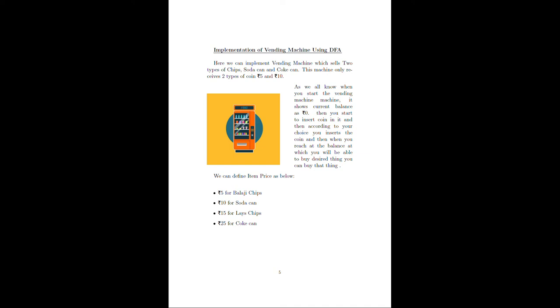Now we can define item prices as below. Simply, the item prices are the states. Q means rupees 5 for Balaji chips, rupees 10 for soda can, and rupees 15 for Coke can.